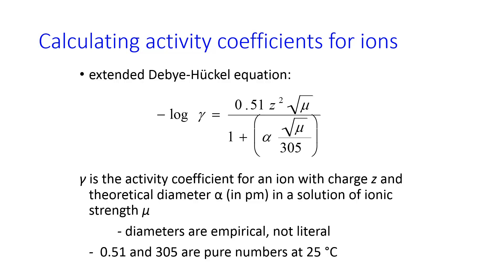But they all have these three variables involved in them. We have mu, the ionic strength. We have alpha, the theoretical diameter of the ion that we care about. And z is its charge. And this equation gives us the negative log of gamma.